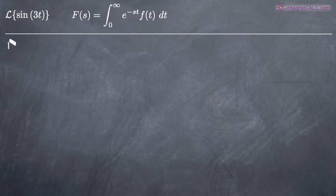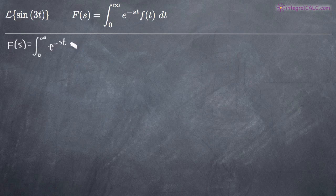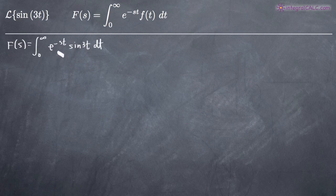So to perform our Laplace transform, we'll get F of s equals the integral from zero to infinity — again, this is all part of the formula — of e to the negative st multiplied by our original function, which is sine of 3t. So we'll go ahead and plug that in. Now that we've got our function plugged into the formula, all we need to do is evaluate the integral and then plug in our limits of integration to evaluate the definite integral.